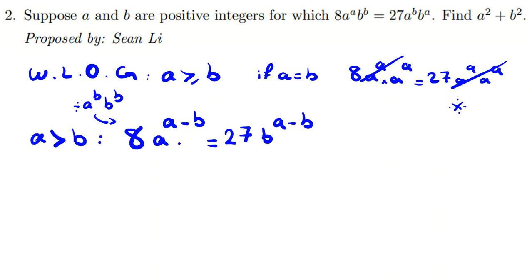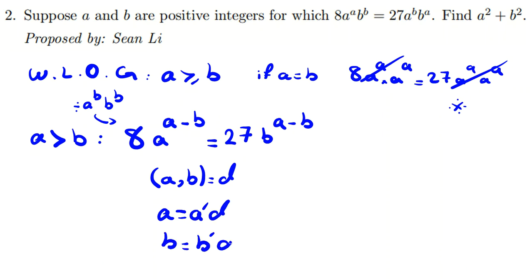Now here is a famous idea in number theory problems, useful from qualifying level up to AIME: when you see a problem like this, consider the GCD of a and b. Let d be their GCD, so a equals a'·d and b equals b'·d, where a' and b' are coprime — if they had a common factor, the GCD would be larger than d, a contradiction.